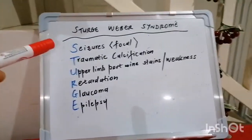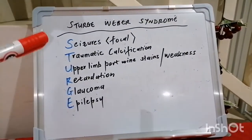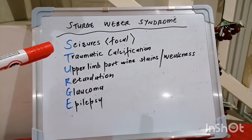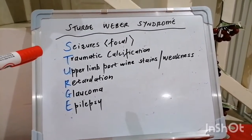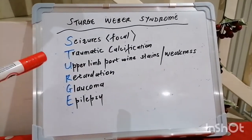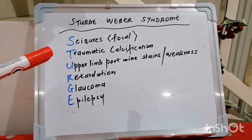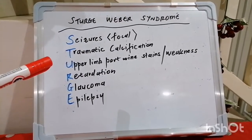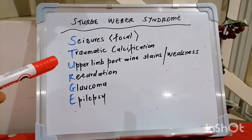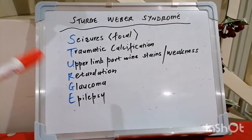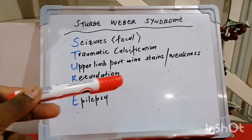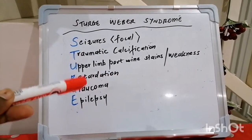I want to make it say Sturge as in Sturge-Weber syndrome. So S stands for seizures, which are normally focal and affect one side of the body typically, although not invariably. T stands for tram-track calcification. U stands for upper limb port-wine stains, which are ipsilateral to the side that has the fit. And weakness is usually contralateral to the port-wine stain.